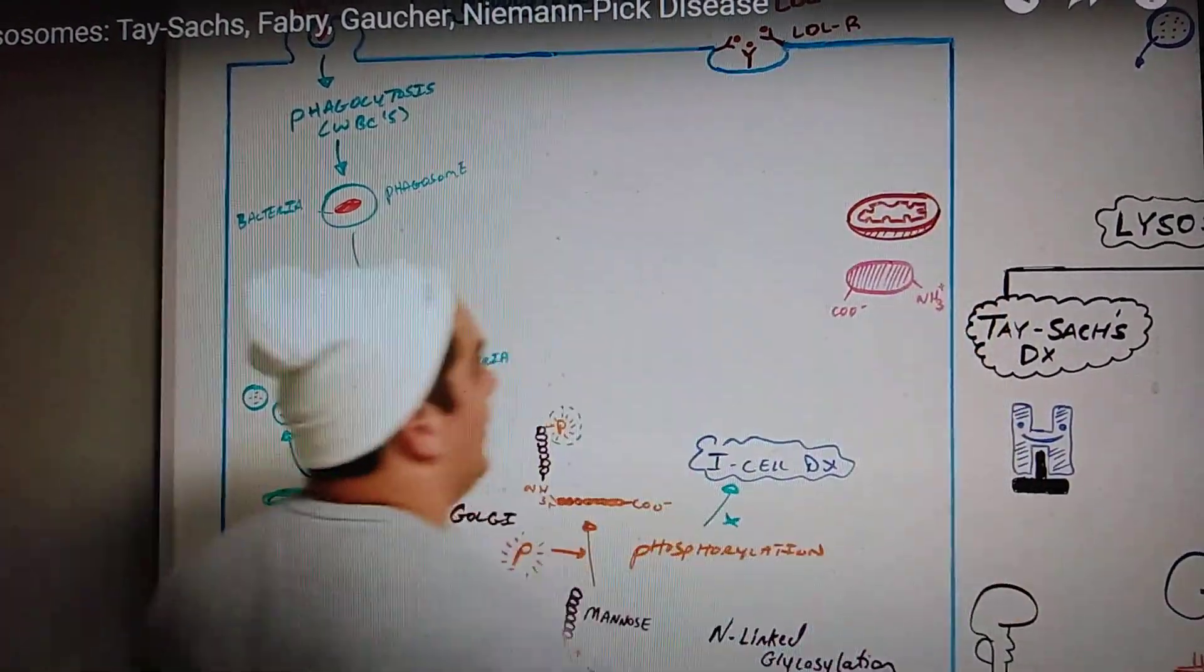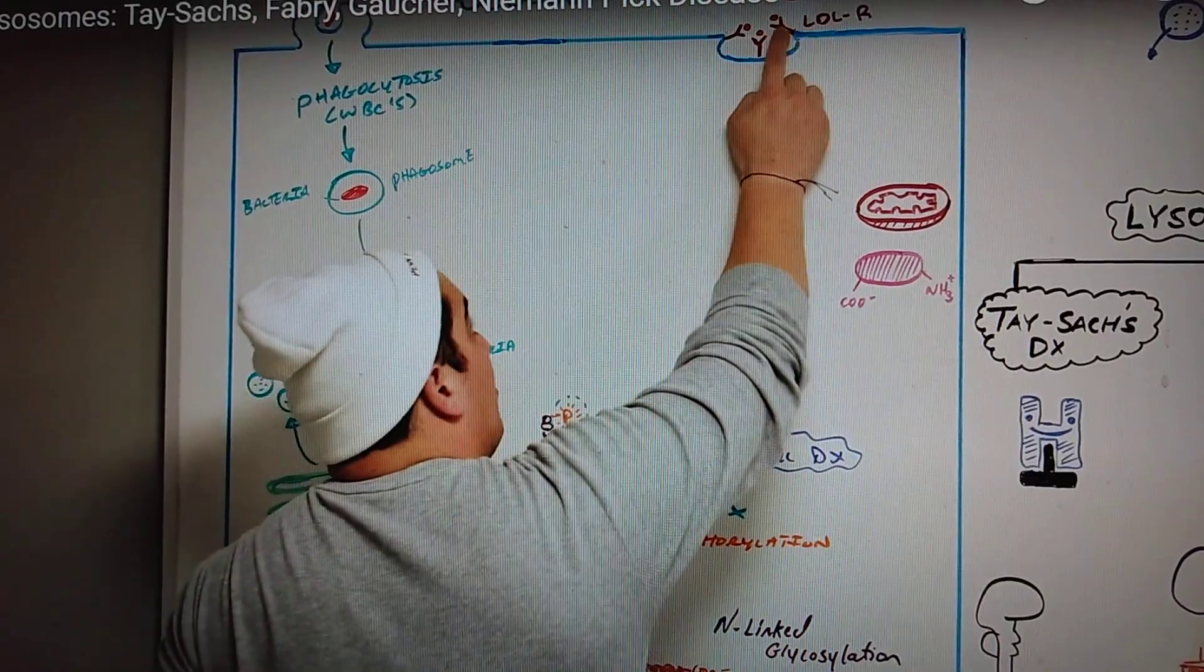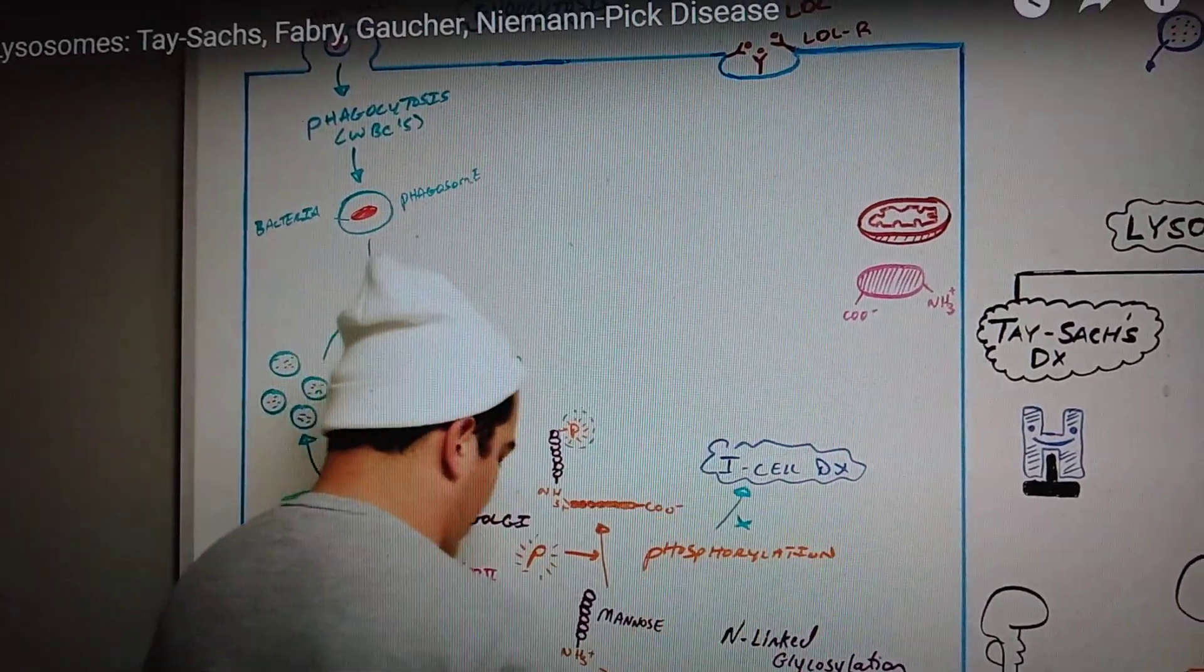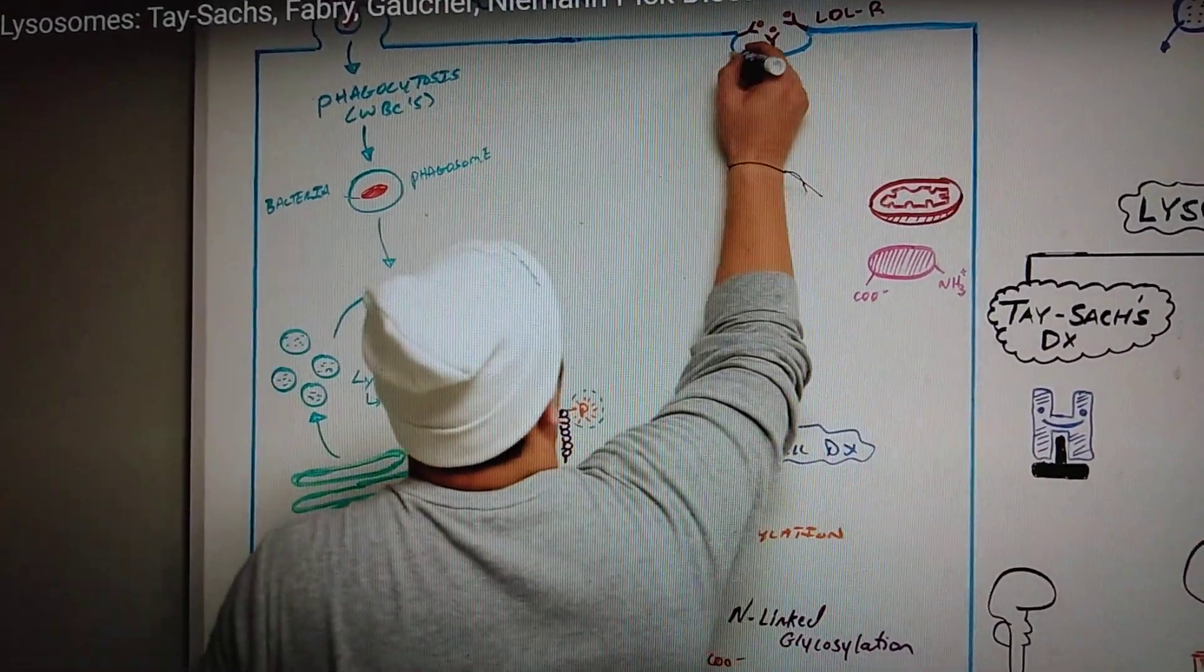This happens on the liver when LDL binds onto this LDL receptor in the liver. There's little proteins, you know, these special little proteins called clathrins. What are they called? Here we're gonna look at this. See these are called clathrins.